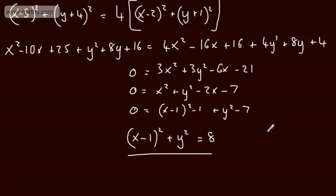So we can see from this that this is going to be a circle. We're going to have the center at 1 comma 0, and then the radius is going to be equal to the root of 8, or 2 root 2.